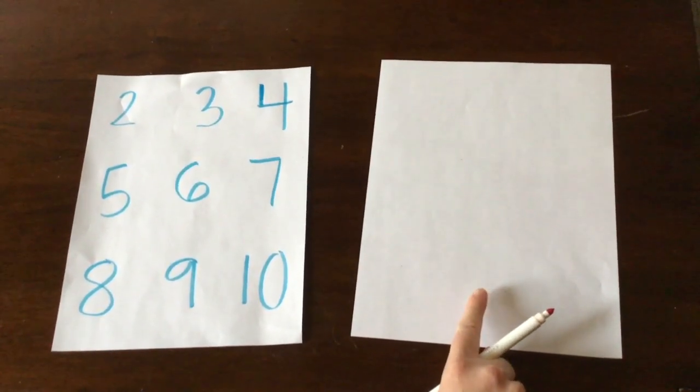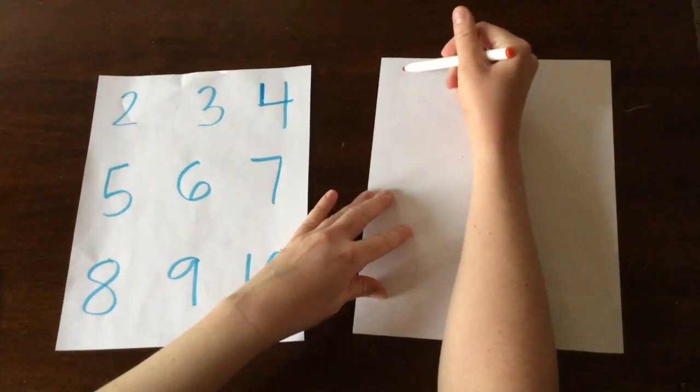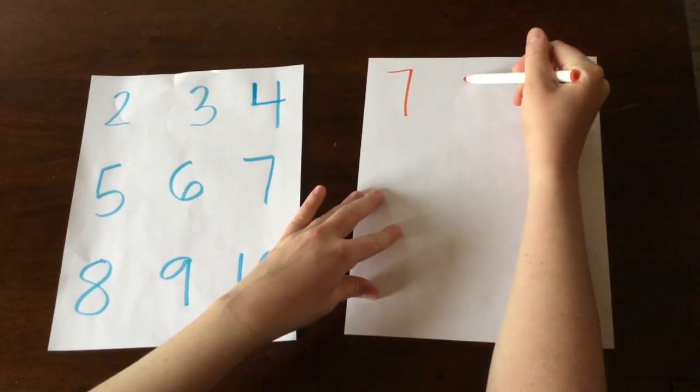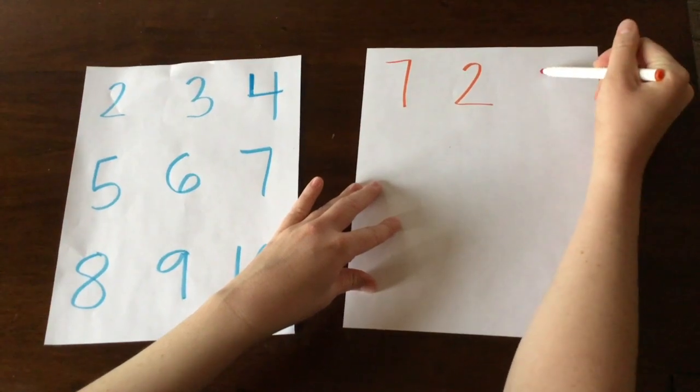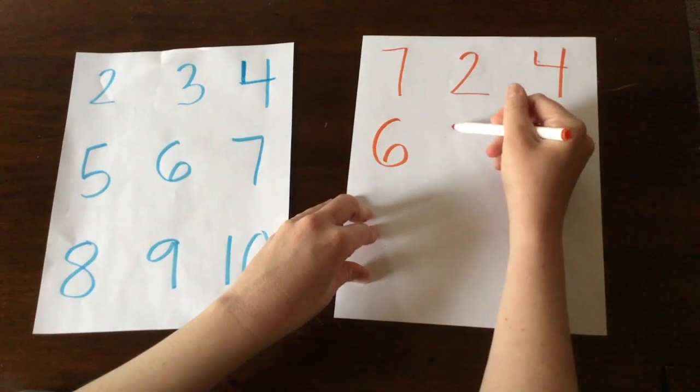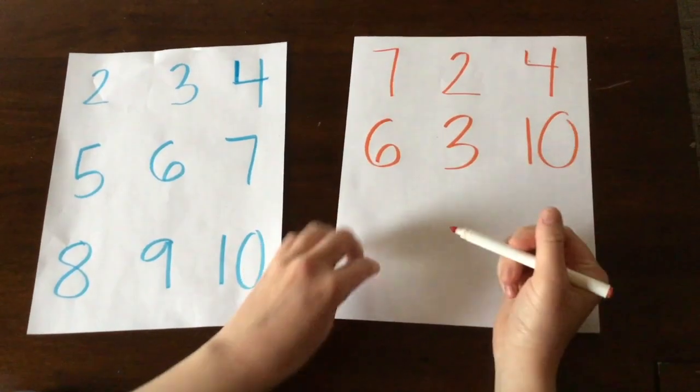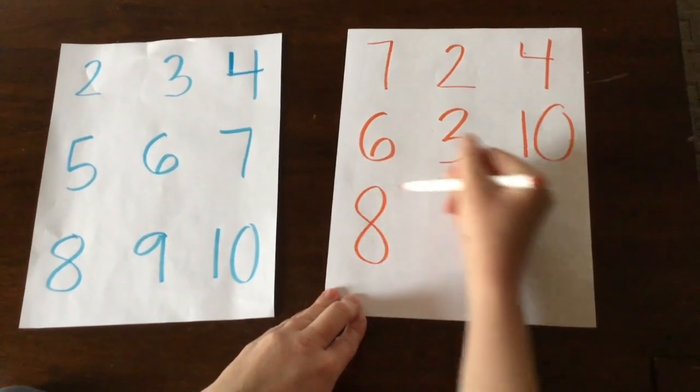Now we are going to do it on the other sheet of paper, but this time I'm going to write numbers randomly. Here's a 7, a 2, number 4, number 6, 3, 10, and so on.